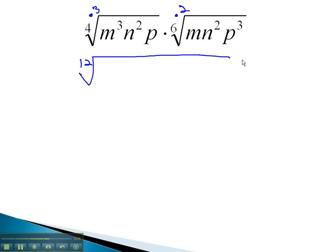We'll also multiply our exponents by 3 and 2 as well, giving us m to the 3 times 3, or 9th, n to the 3 times 2, or 6th, p to the 3rd, and now multiplying by 2, m squared, n to the 2 times 2, or 4, p to the 2 times 3, or 6.